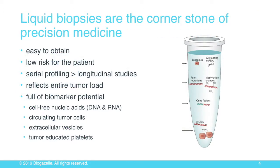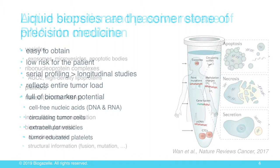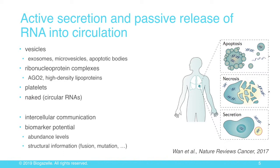We have finally entered this era of precision medicine where we try to provide the right drug to the right patients at the right time, and molecular tests are crucially important. Liquid biopsies have established themselves as a cornerstone of precision medicine — they are easy to obtain, confer low risk to the patient, enable serial profiling, and allow longitudinal studies. In oncology, a liquid biopsy likely reflects the entire tumor load. The liquid is full of biomarker potential: cell-free nucleic acids, RNA, DNA, circulating tumor cells, extracellular vesicles or exosomes, and tumor-educated platelets.